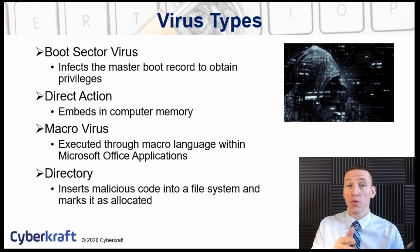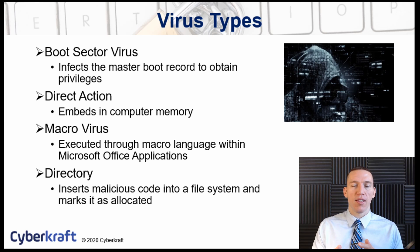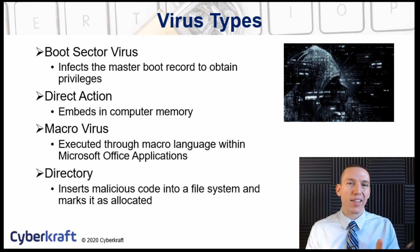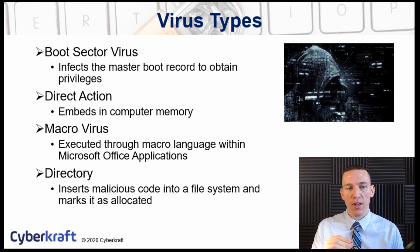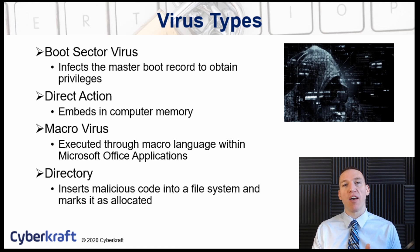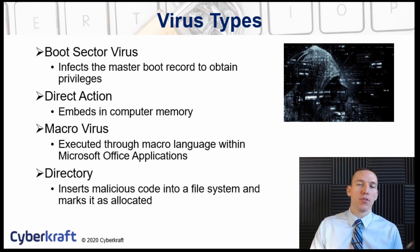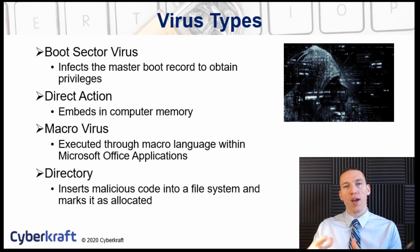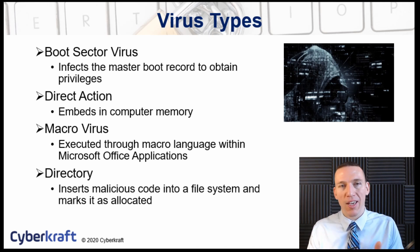Different types of viruses include a boot sector virus, which infects the master boot record to obtain administrative privileges — either the administrator account or the root account within a Linux or Unix device. A direct action virus embeds itself in computer memory, making it more difficult to detect. A macro virus executes when you run a macro on a Microsoft Office application — Excel spreadsheets or Word documents may have macros, and if that file is infected, executing a macro also infects your computer.